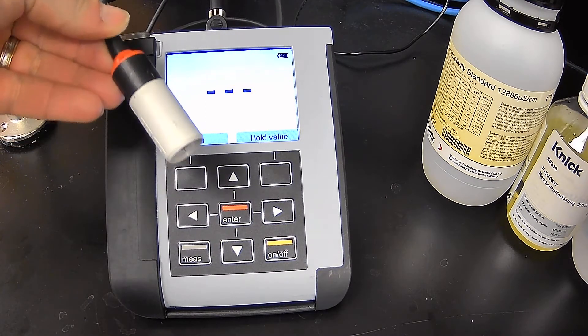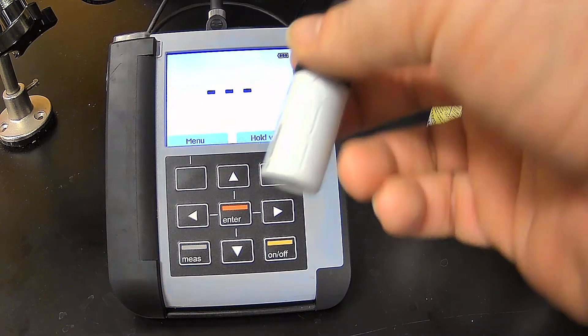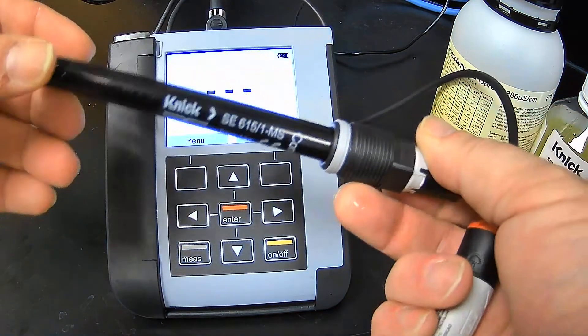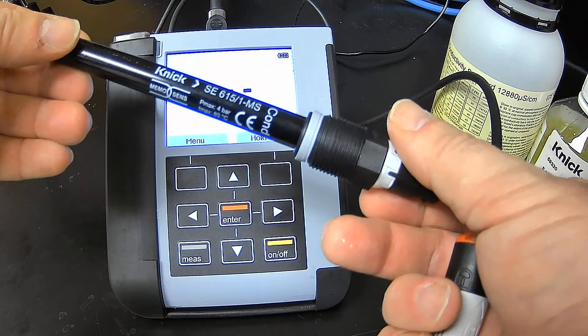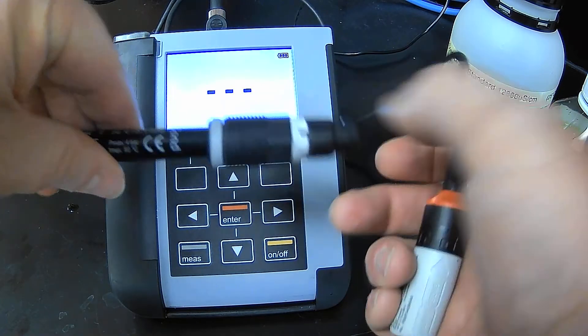This is the cable that's plugged into it currently. And then what we're going to calibrate is this electrode right here, which is a memo sense conductivity electrode with a PG 13.5 thread.